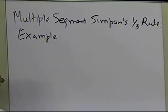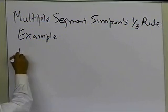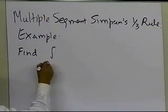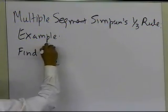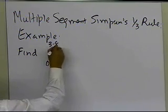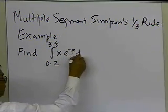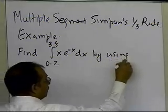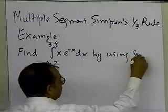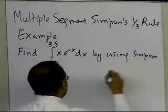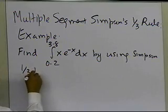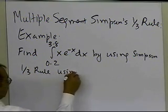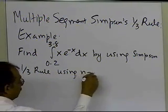The example we're going to take is: find the approximate integral of x·e^(-x) dx, by using Simpson's one-third rule, using n equal to 6.